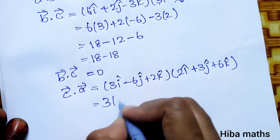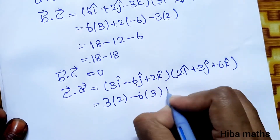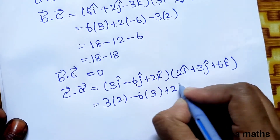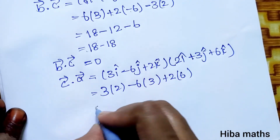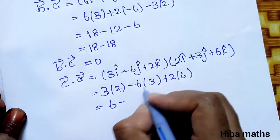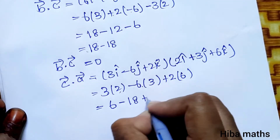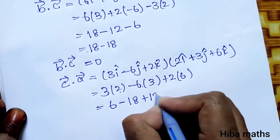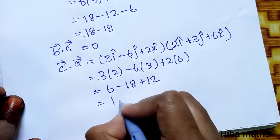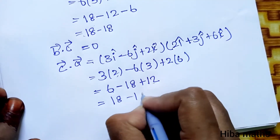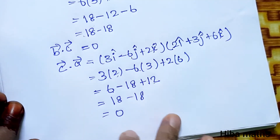Now C vector dot A vector: (3i minus 6j plus 2k) dot (2i plus 3j plus 6k). That gives: 3 into 2, minus 6 into 3, plus 2 into 6. That is 6 minus 18 plus 12, which equals 18 minus 18, equal to 0.